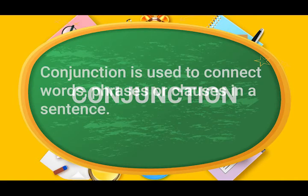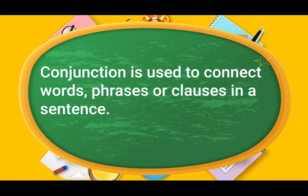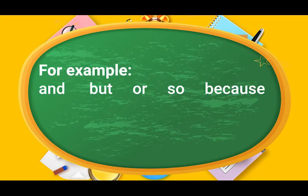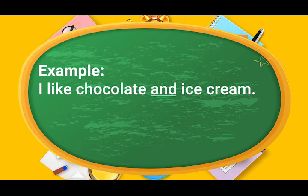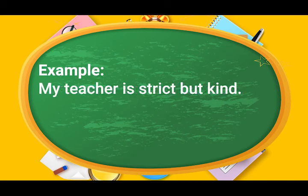Conjunction. Conjunction is used to connect words, phrases or clauses in a sentence. For example: and, but, or, so, because. Example sentences are: I like chocolates and ice cream — the conjunction in this sentence is 'and'. My teacher is strict but kind — in this sentence, the conjunction word is 'but'.